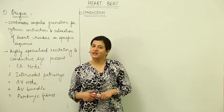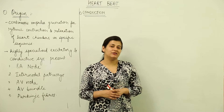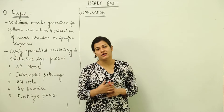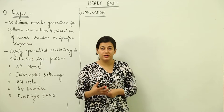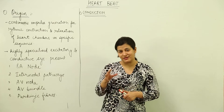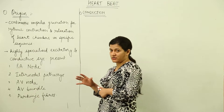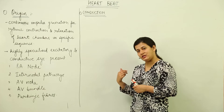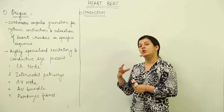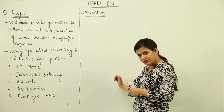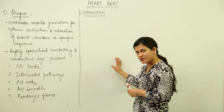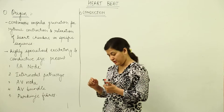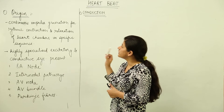We have gained enough knowledge about the heart muscles, the arrangement of blood vessels through the heart, and how the heart works and functions. Now let us talk about heartbeat — first we will see its origin, then its conduction, and then we will discuss the systole and diastole and heart sounds.